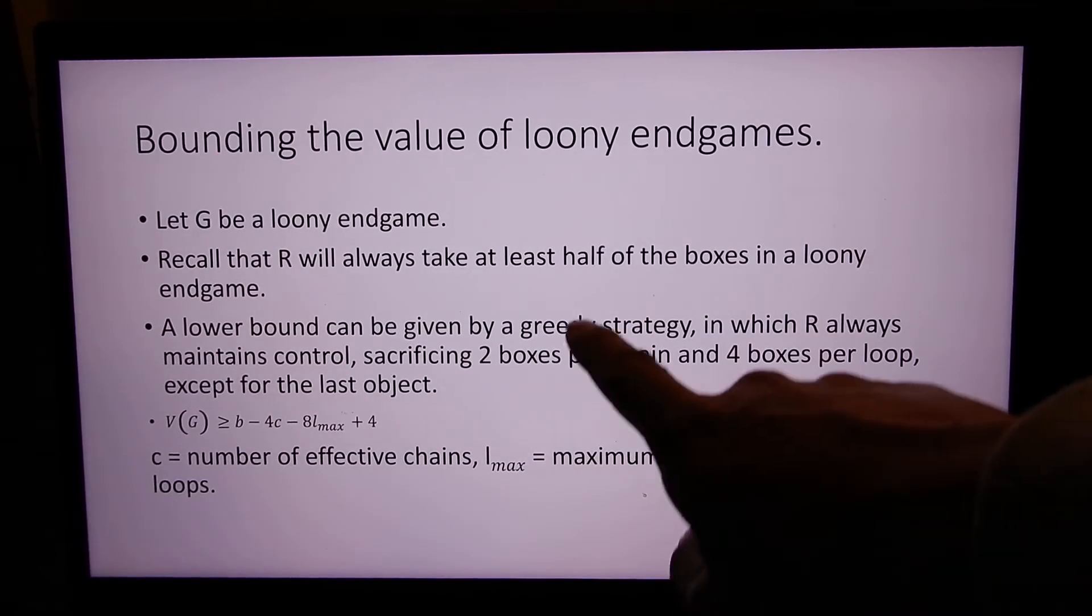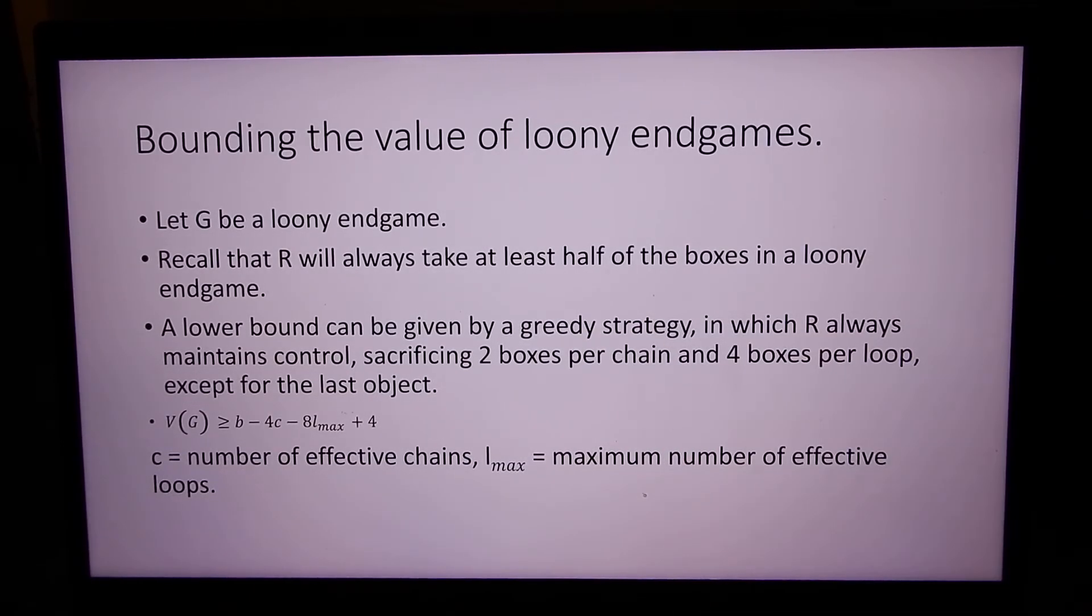It turns out that a greedy strategy in which right always maintains control, which means sacrificing two boxes every time a chain is given, four boxes every loop, and then you have to bound how many chains and loops are actually given and taken. And it turns out this is tight enough for us to get a result most of the time.